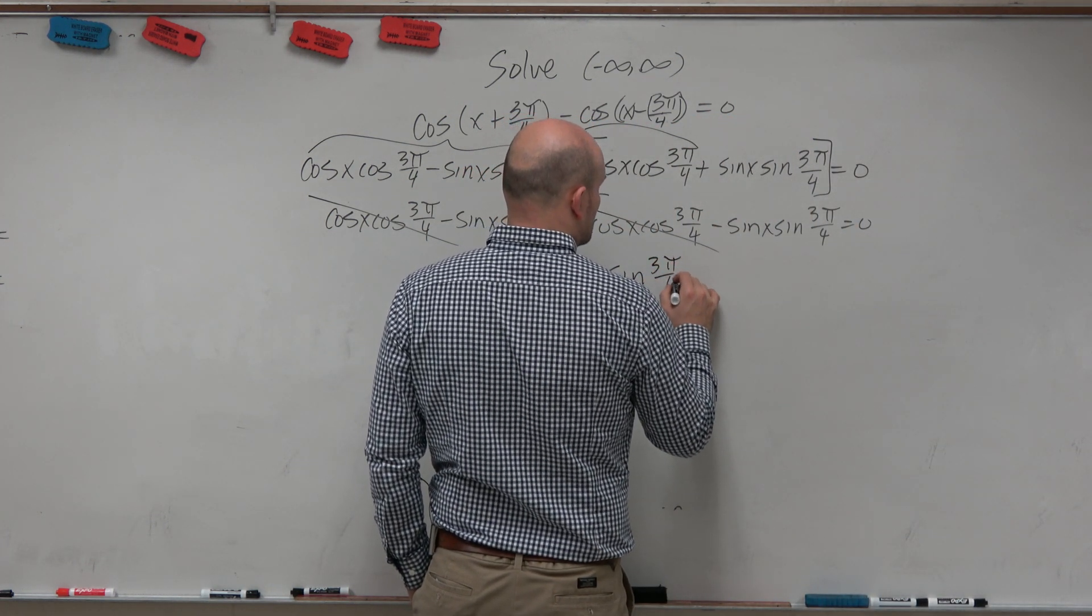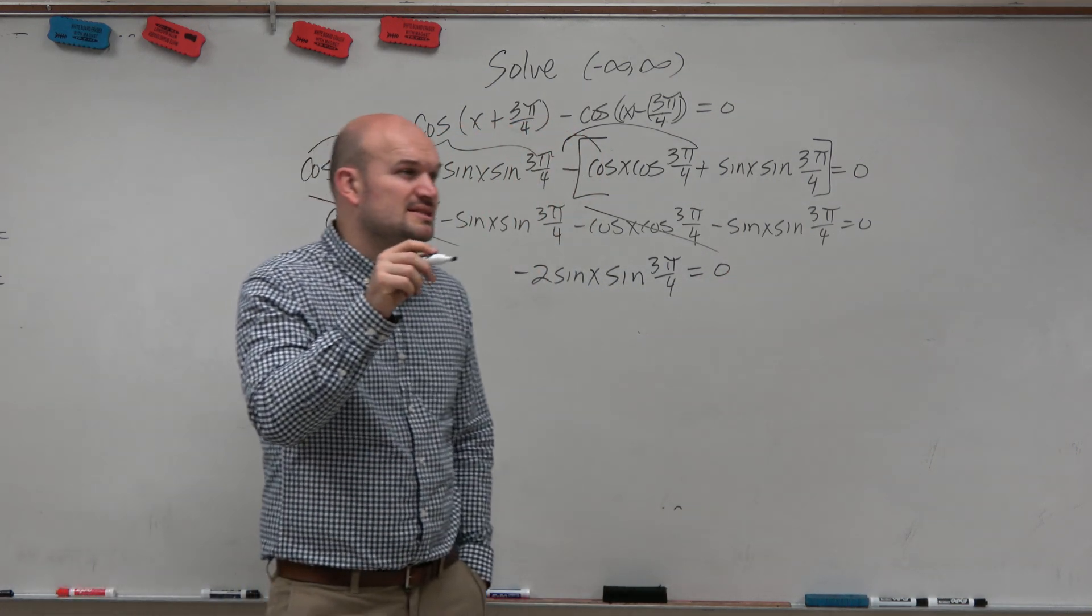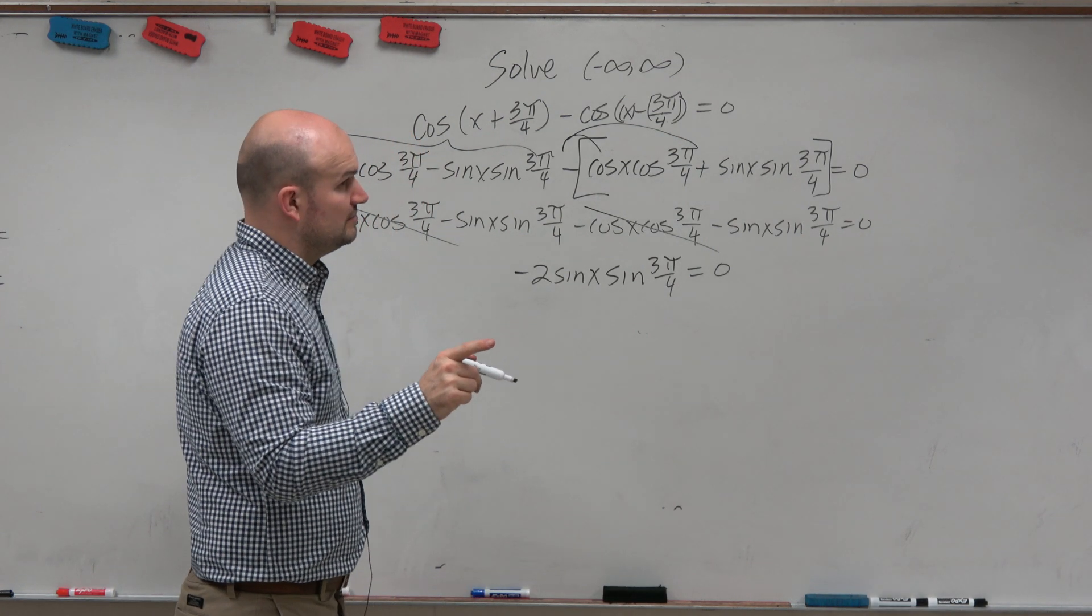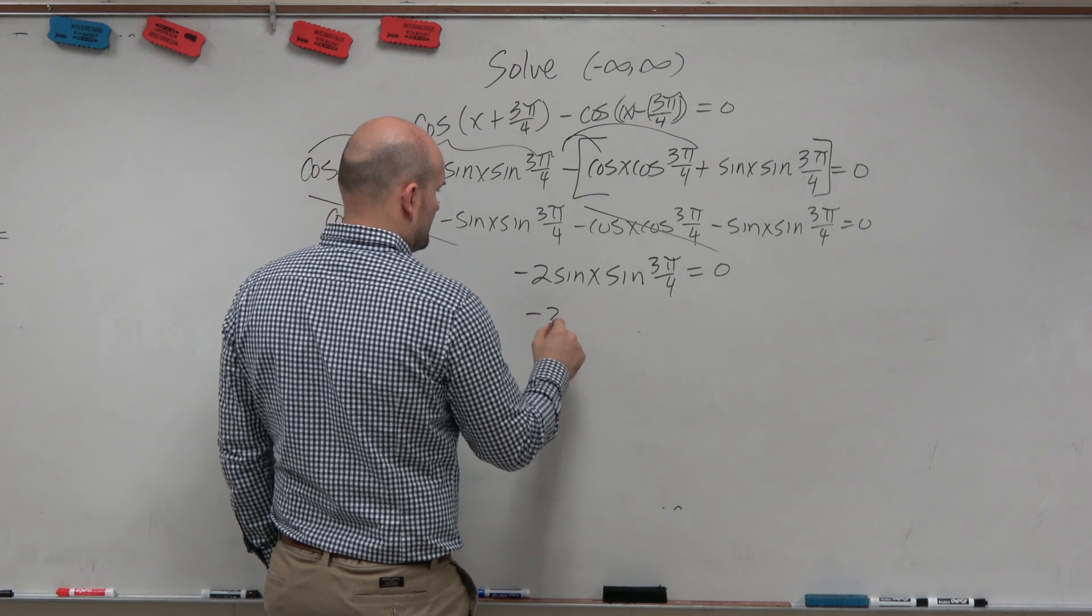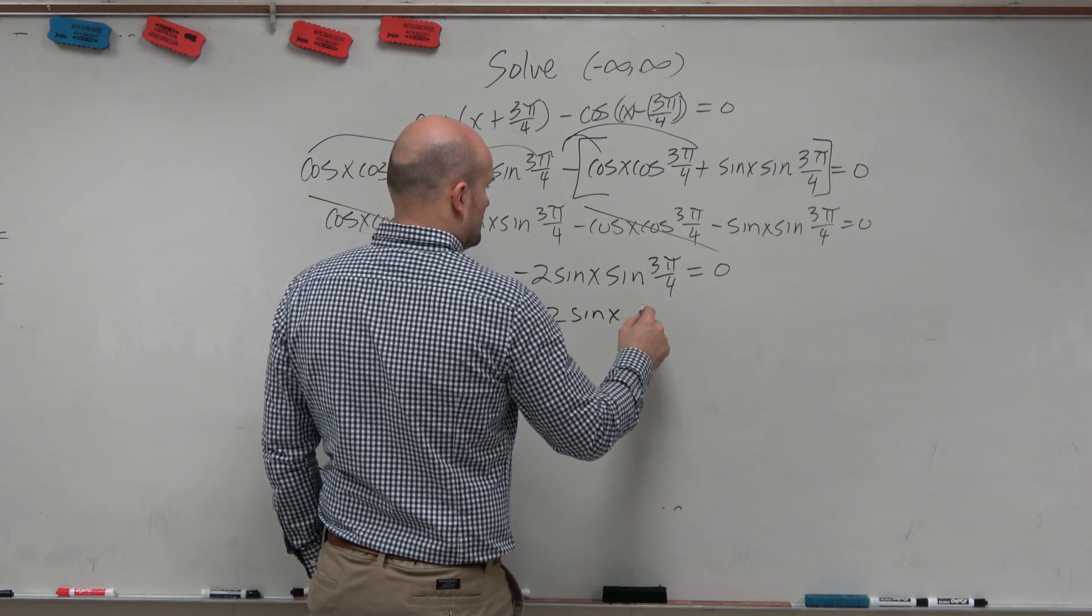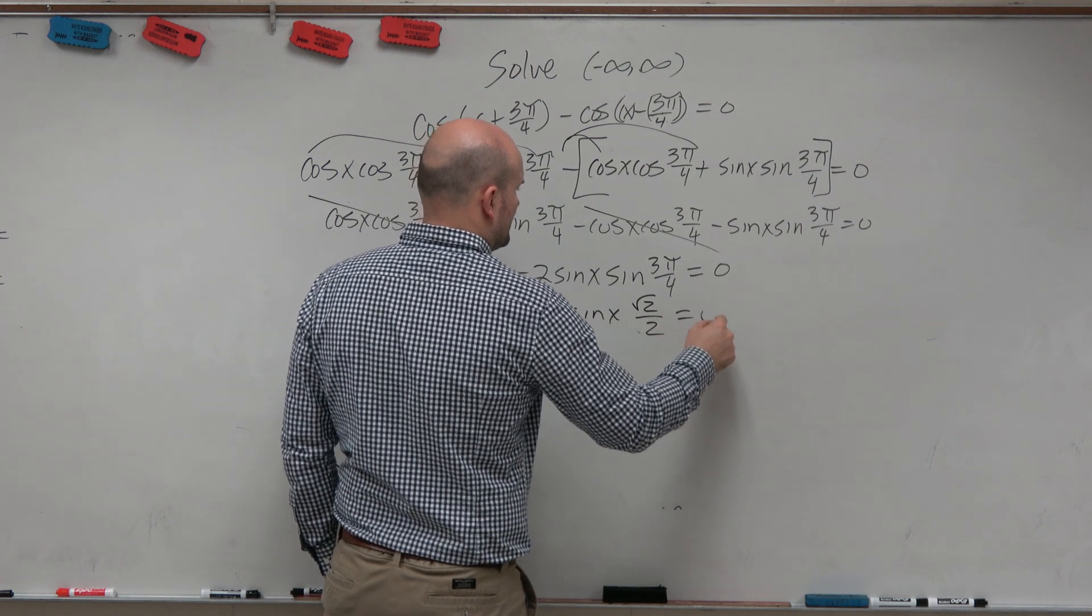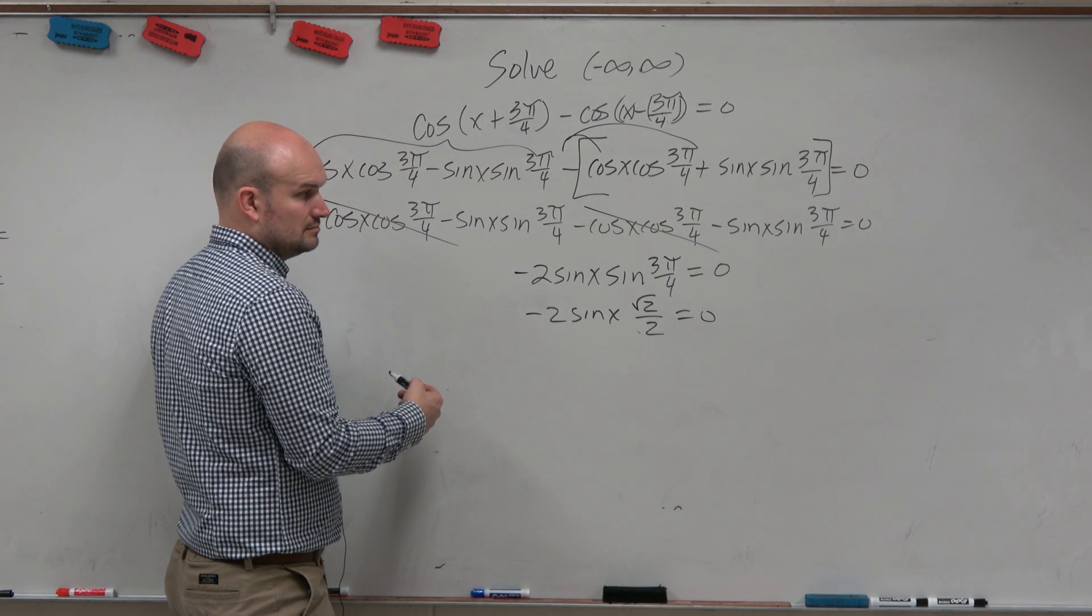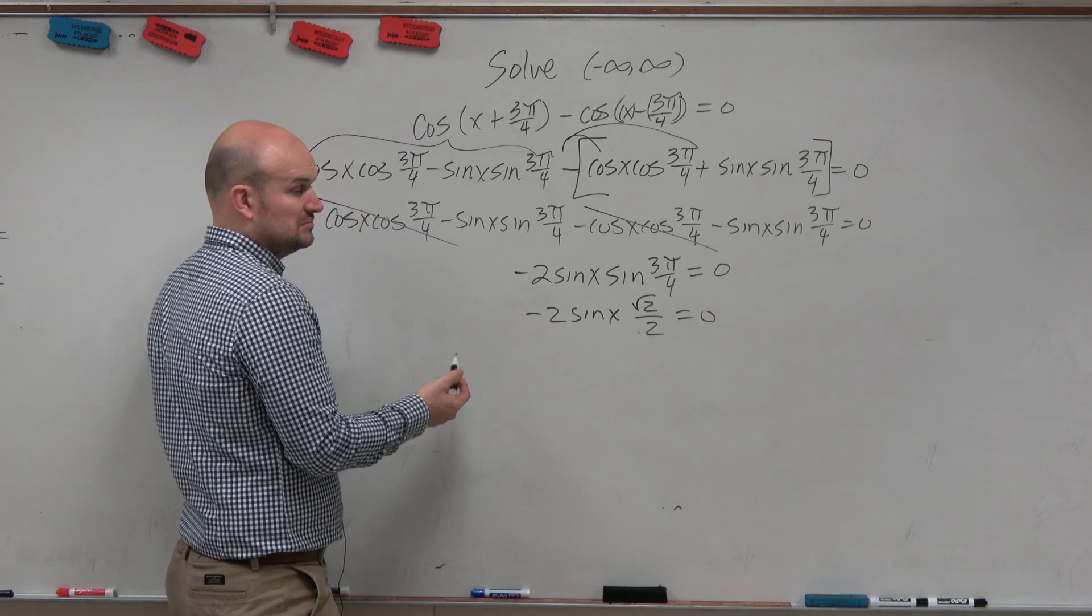Do we know what sine of 3π over 4 is? 3π over 4, let's see, that's going to be in the second quadrant. So that's, careful, positive, square root of 2 over 2, right? Could the 2's divide out? Yes.